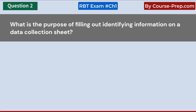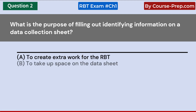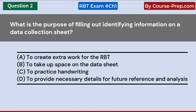What is the purpose of filling out identifying information on a data collection sheet? A. To create extra work for the RBT. B. To take up space on the data sheet. C. To practice handwriting. D. To provide necessary details for future reference and analysis. Answer D: To provide necessary details for future reference and analysis.